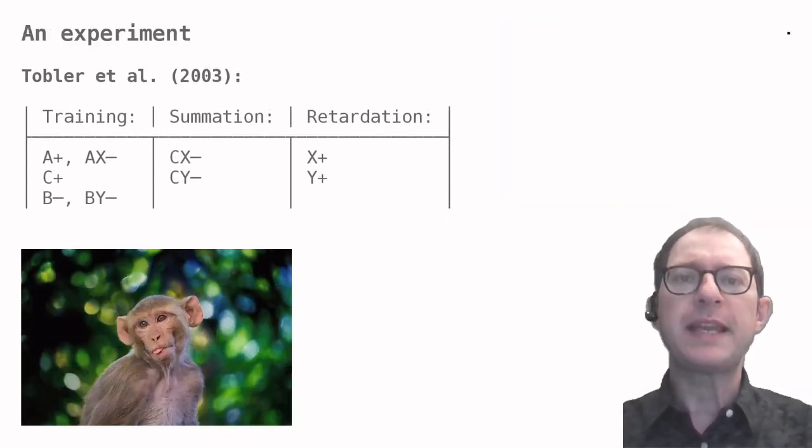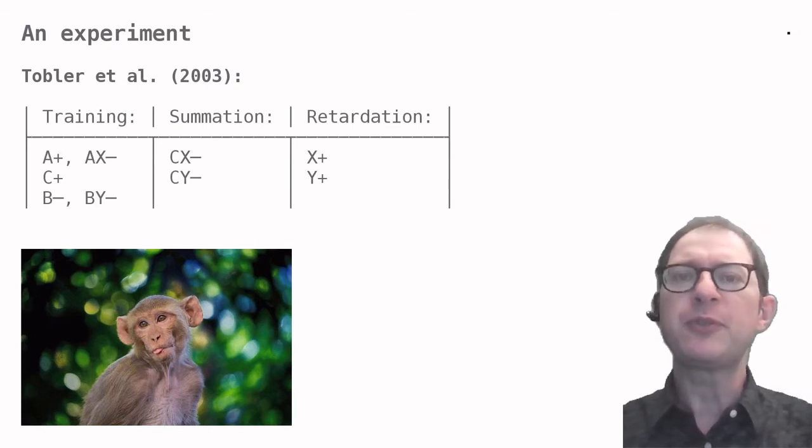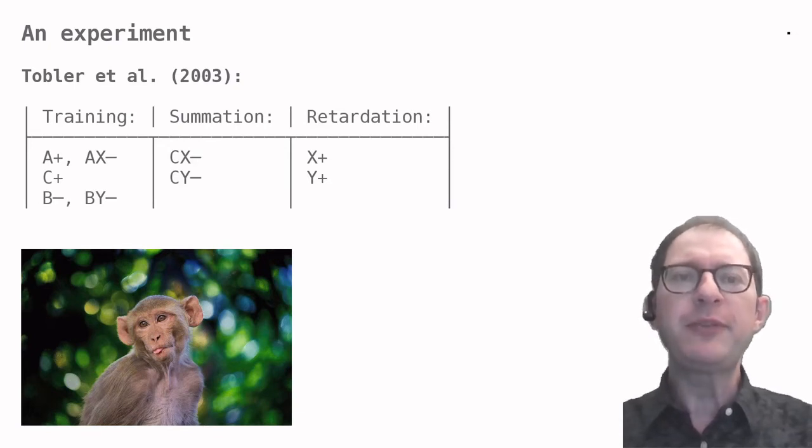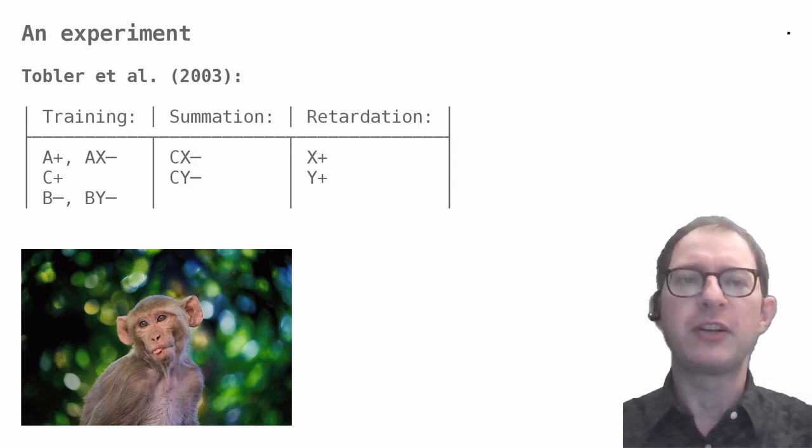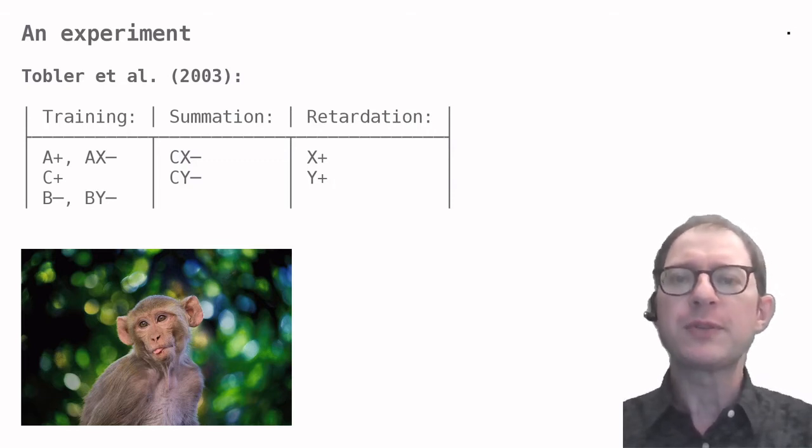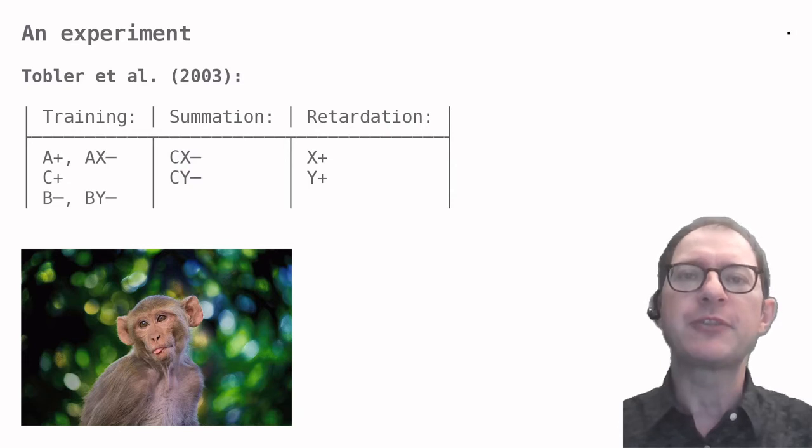Let's see both tests at work in an actual experiment, performed by Tobler and colleagues on macaque monkeys. The stimuli in this experiment were different shapes on a computer screen, which here I indicate with letters as used by the original authors. The reward was fruit juice, and the conditioned response measured was the licking of the fruit juice spout. In other words, when the monkeys learned that the stimulus signals the delivery of fruit juice, they licked the spout in anticipation. The experimental design in the table is a bit more complicated than what was on the previous slide, but we'll go through it step by step.